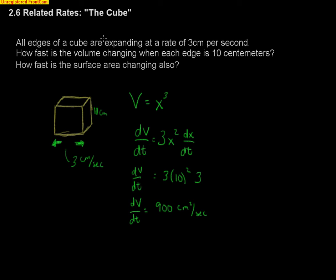And then if we wanted to expand this even more, how fast is the surface area also changing? Well, the surface area of a cube, well, the area of one side is going to be x squared, because, again, if it's a cube, same side by same side. And then there's six sides to a cube, so the surface area is going to be 6x squared.